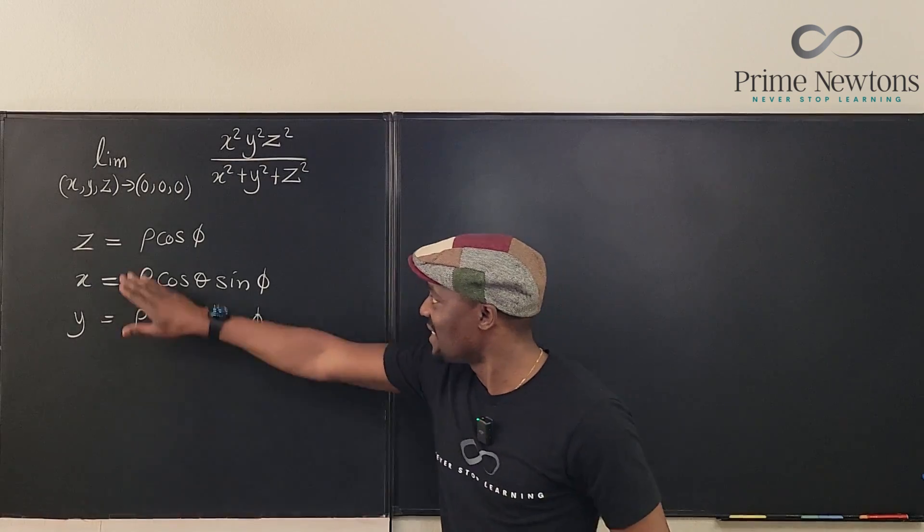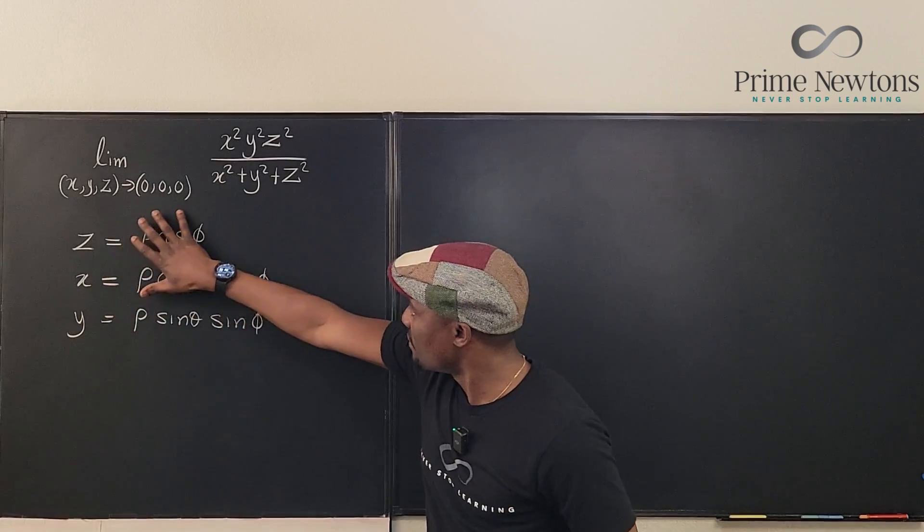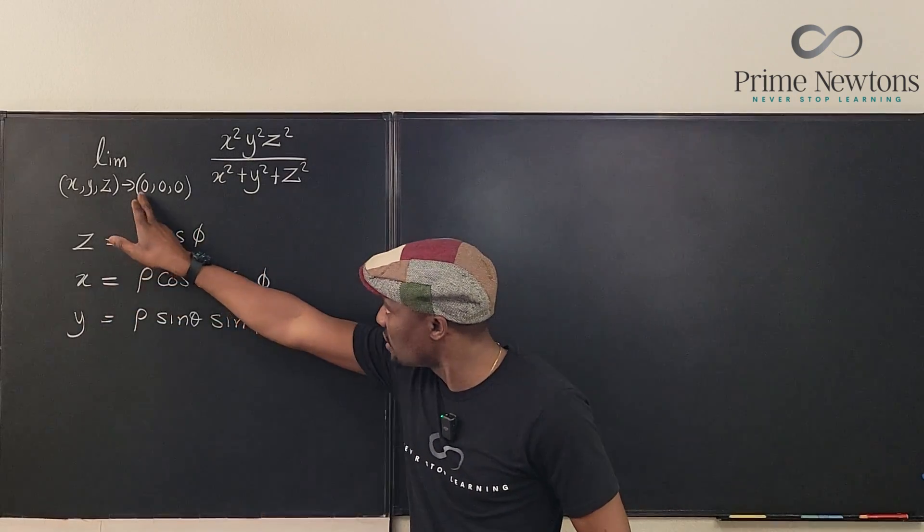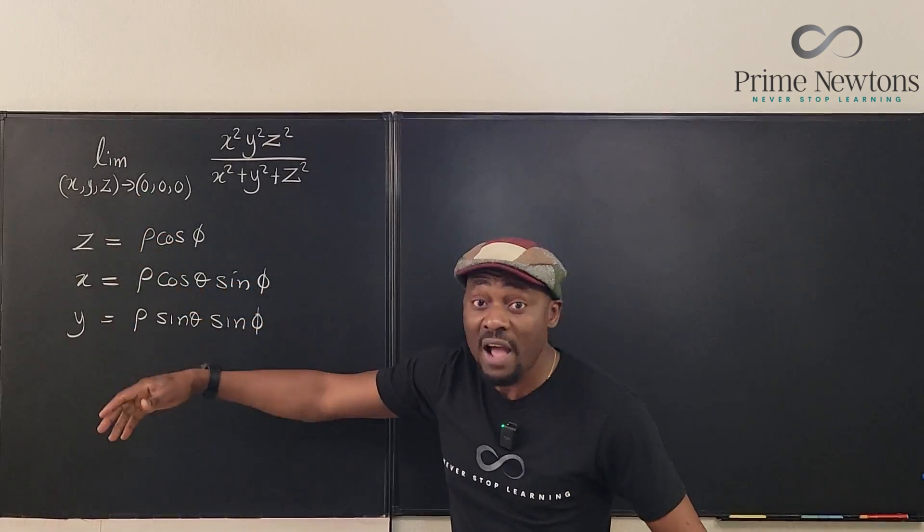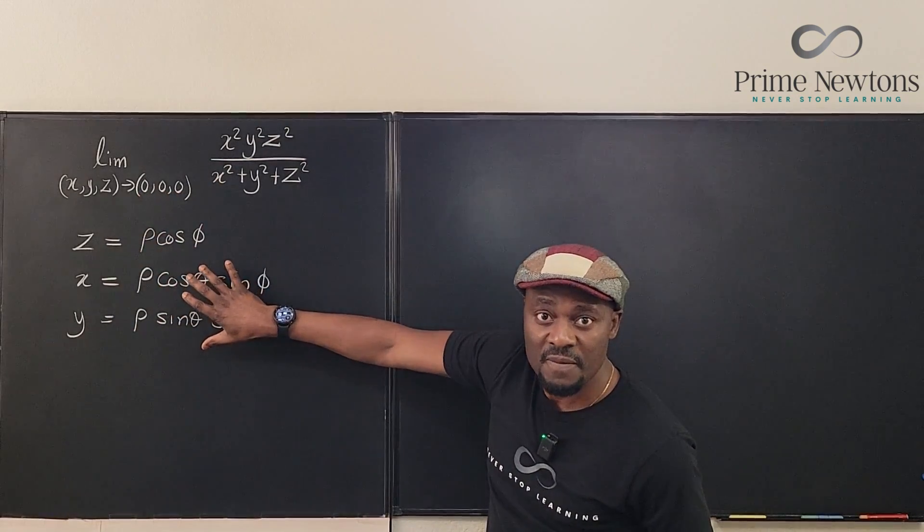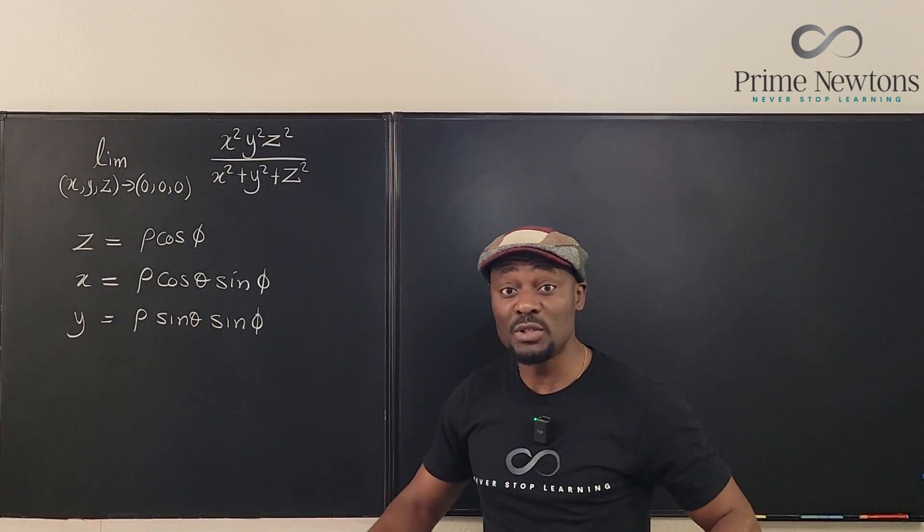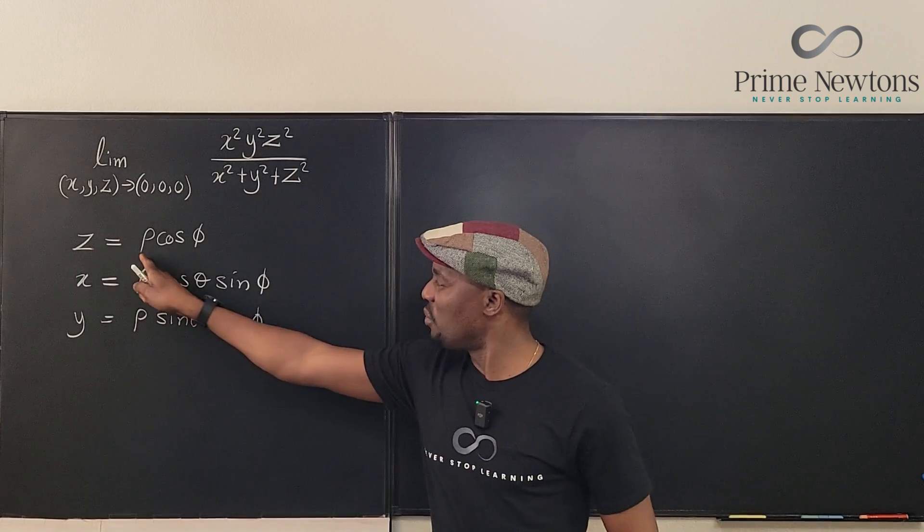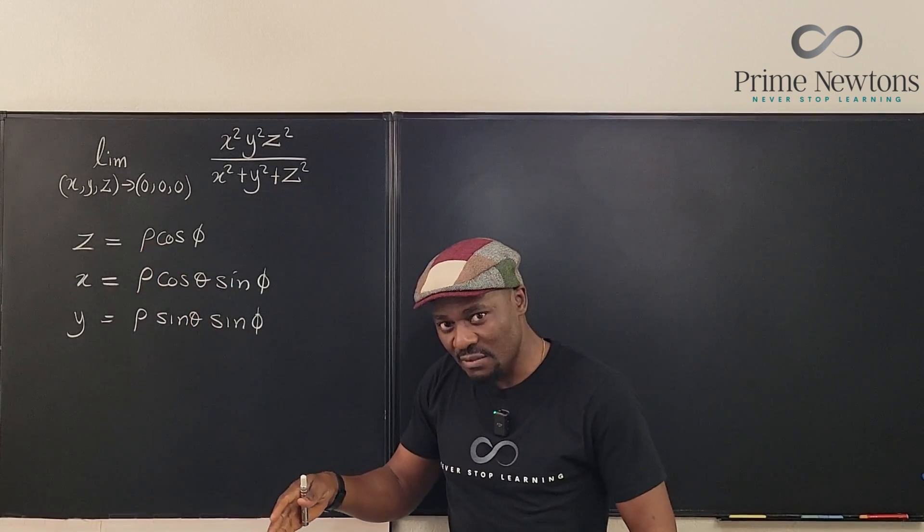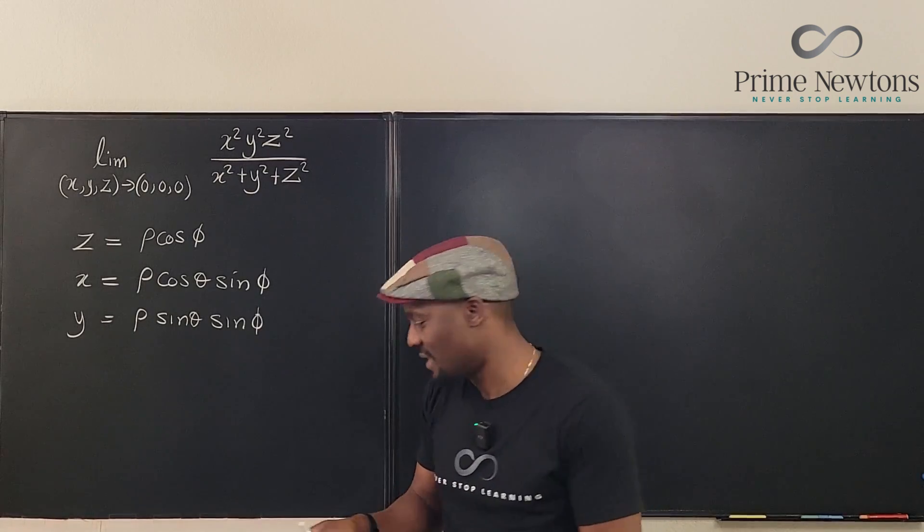So these are the three directions from the x y z directions we have converted them into spherical coordinates. So now we're about to shrink the ball to the point zero zero zero. All we have to do is to rewrite this limit in terms of this. And what's important when it comes to spherical coordinates, the most important thing is your rho. The rho is getting smaller, the radius will get smaller and smaller. So what's the radius in this case?